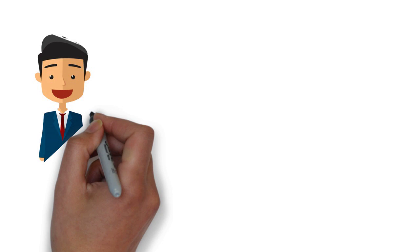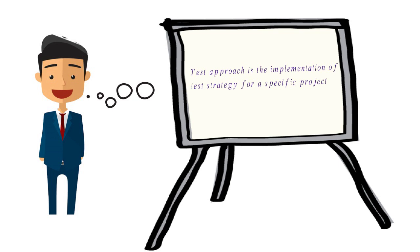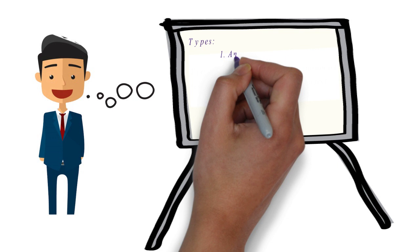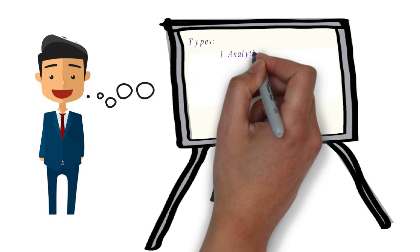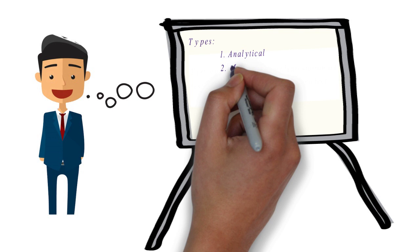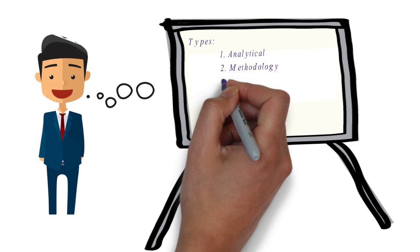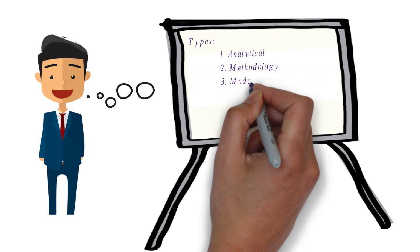Let's move to the next topic: test approach. Test approach is the implementation of test strategy for a specific project. Depending on the goal of the project, the approach is selected. The different types of test approaches are: analytical approach, also called risk-based approach, where testing concentrates mainly on risk-based areas. For example, in a banking project, financial transaction areas are high risk and testing concentrates more on those areas. Another approach is methodological approach, such as experience-based, failure-based, error guessing, and fault attacks. An experienced person knows where they get the maximum number of defects, so they perform testing more on those areas.